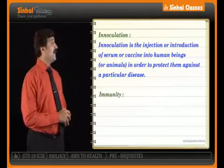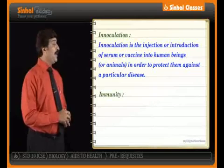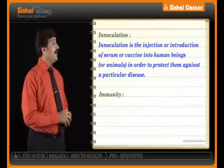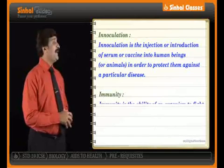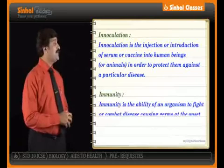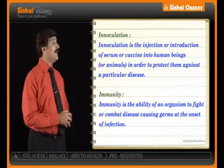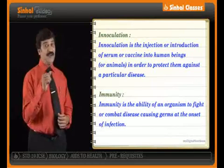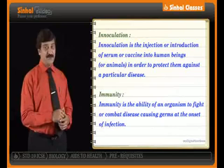What is immunity? Immunity is the ability of an organism to fight or combat disease-causing germs at the onset of infection.